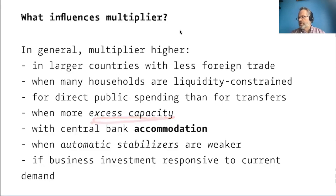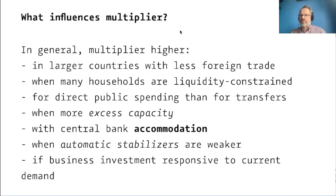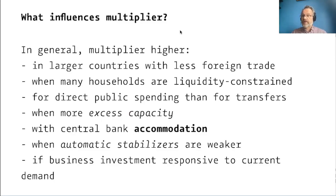When there's more excess capacity in the economy, we expect a larger multiplier. In the kind of economy we live in, most businesses most of the time are well away from their capacity constraints — most restaurants would be happy to seat more customers. But businesses do reach capacity limits, and in an economy that's already booming and running hot, more businesses are likely to face supply constraints, which might lead to a smaller multiplier. Central bank accommodation, as mentioned, is also a critical factor.